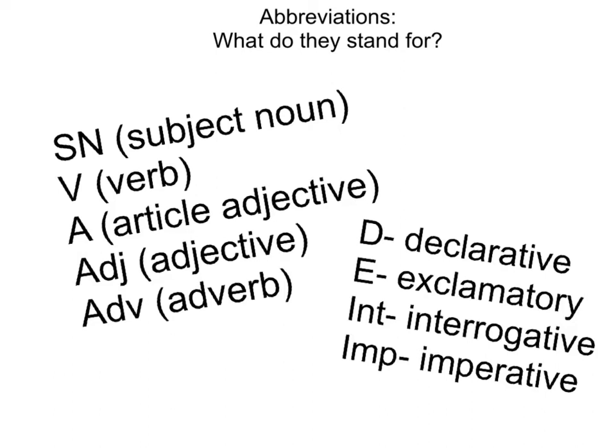The first abbreviation is SN and it stands for the subject noun. Whenever we are looking for the subject noun, we're always going to ask who or what our sentence is about. Then we come to the verb, which is just a capital letter V. Usually when we're looking for the verb, we are going to ask what is being said about our subject noun — what is it that the subject noun is doing within the sentence?